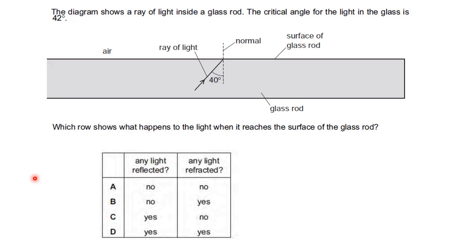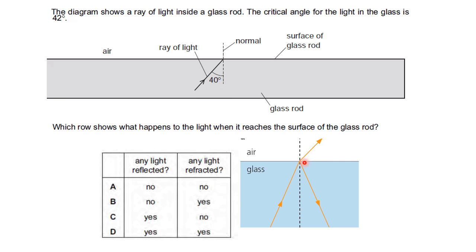Question 3: The diagram shows a ray of light inside a glass rod. The critical angle for the light in the glass is 42 degrees. What happens to the light when it reaches the surface? From the diagram, the angle of incidence is 40 degrees, which is less than the critical angle of 42 degrees. When the angle of incidence is less than the critical angle, some rays will be reflected and some will be refracted. The answer is D.